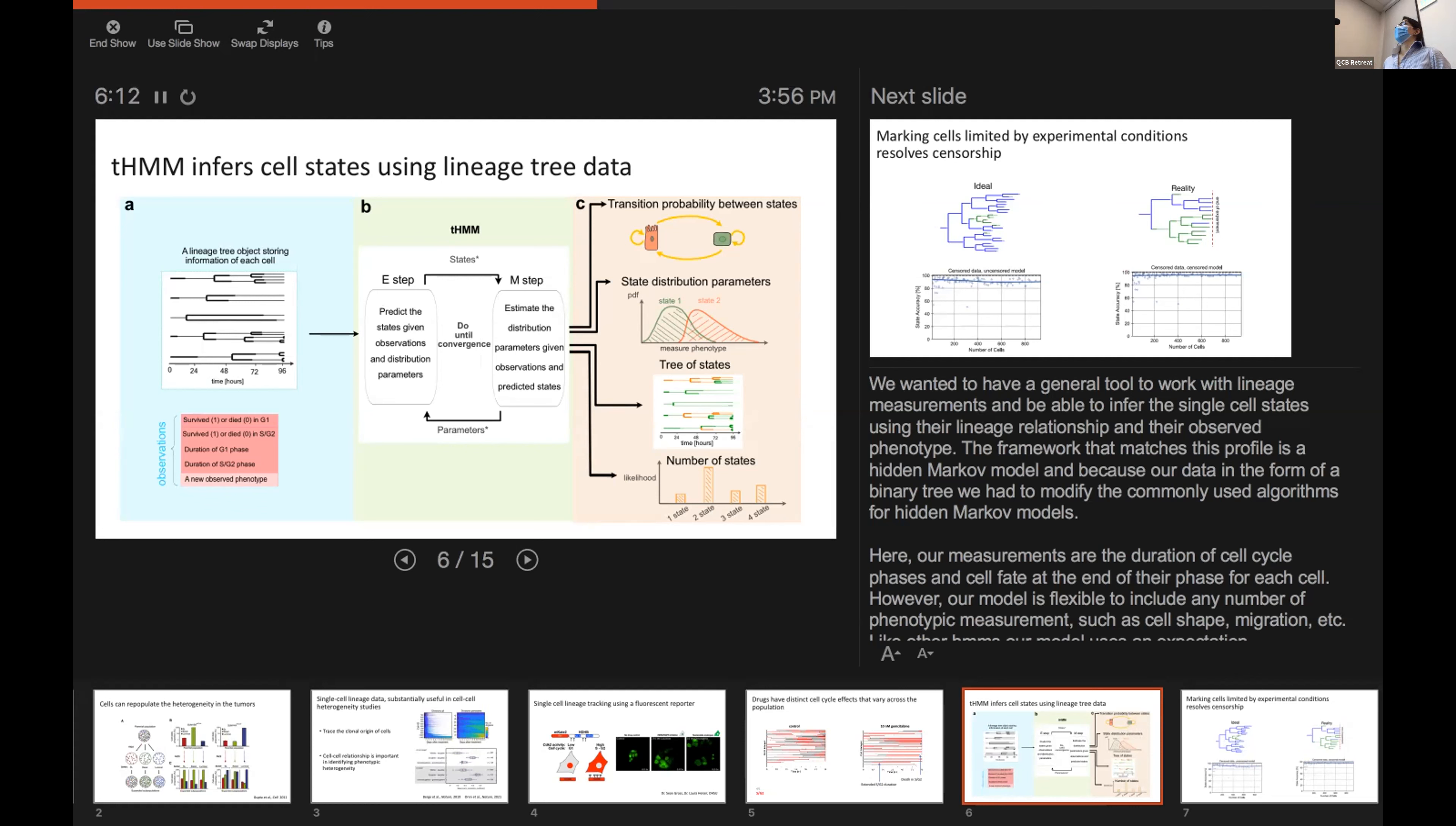And also, we could have a tree of states, which means we could assign each cell its most probable state. And last but not least, we could infer the most likely number of states in our population.